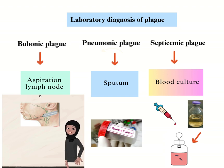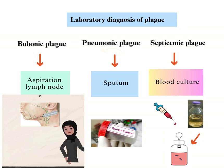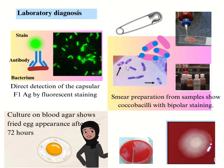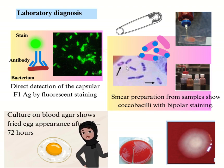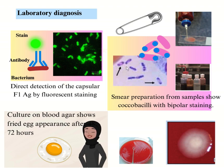Laboratory diagnosis of plague: specimens include aspiration from enlarged lymph nodes, culture of sputum, and blood culture. Direct detection of the capsular F1 antigen by fluorescent staining. Smear preparation from samples shows coccobacilli with bipolar staining using methylene blue or Giemsa stain. Culture on blood agar shows a fried egg appearance after 72 hours.